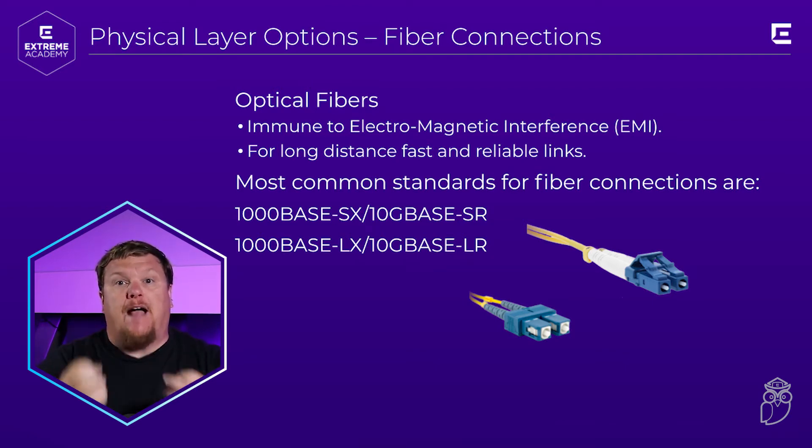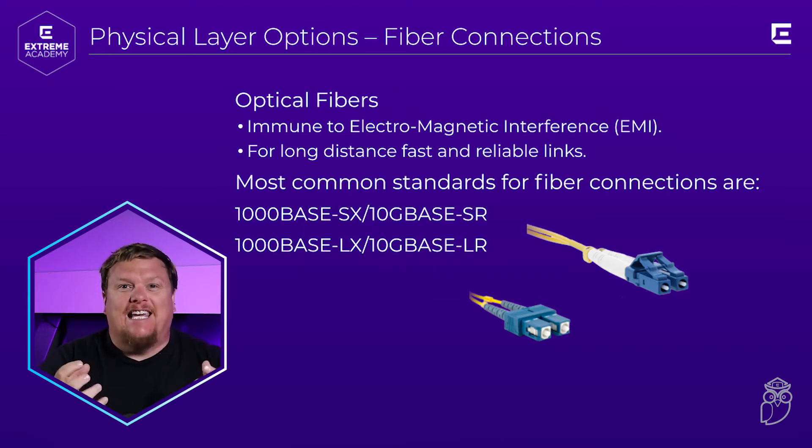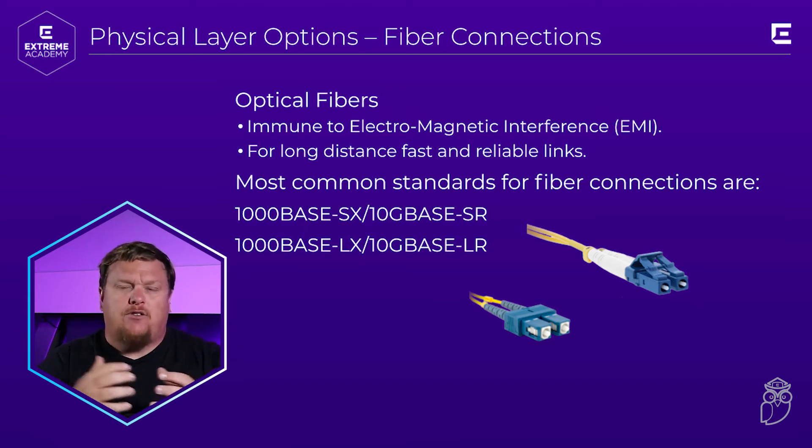A lot of people think fiber is faster, and sure, it can be. But to a home, copper versus fiber has no difference in speed. What fiber is really good at is distance. If you need to transport signals underground in conduits over really long distances, fiber is great for that. Copper is typically used for phone lines and in your home or on a large campus — a university or office space — there is copper going from computer to computer. There's no advantage to fiber there; it just costs more money.